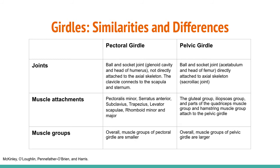Most muscles that insert on the femur and move it originate on the pelvic girdle, which ensures stability. The psoas major and iliacus make up the iliopsoas group. The gluteus maximus is the largest gluteal muscle; deep to it is the gluteus medius, and deep to the gluteus medius is the gluteus minimus. These gluteal muscles attach to the pelvis at the ilium, sacrum, and coccyx, and insert on the femur or iliotibial tract.